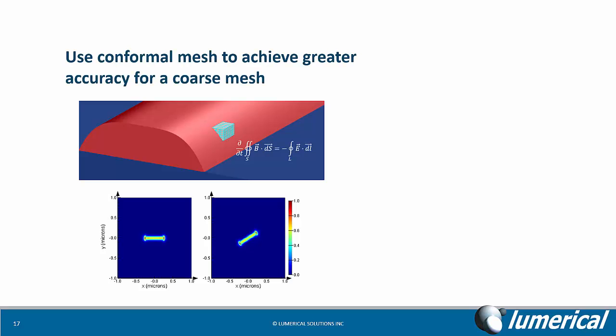FDTD Solutions is the only dedicated nanophotonic FDTD simulator that offers a combination of conformal and graded meshing. The conformal mesh allows one to obtain accurate results even when boundaries are not aligned with a Cartesian mesh. For most simulations, the results obtained using the conformal mesh will converge much faster than the results obtained using the staircase mesh, and this means that we can get accurate results without using a very fine mesh.